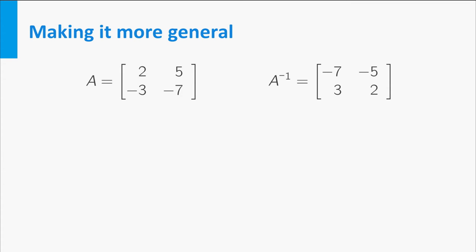Now take a closer look at A and its inverse. You can see that the inverse contains almost the same numbers as A. On the diagonal, the 2 and the minus 7 have traded places, while all other numbers are multiplied by minus 1. Might this be the same for every 2 by 2 matrix?